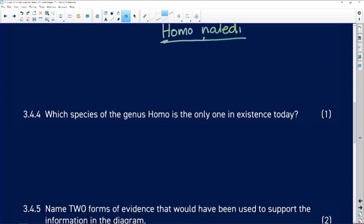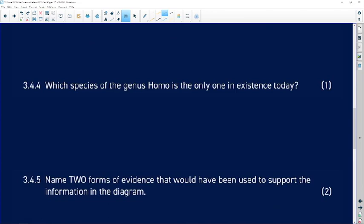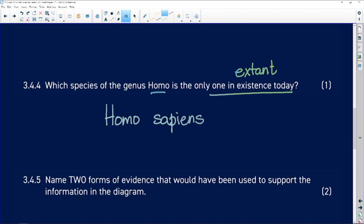Which species of the genus Homo is the only one in existence today? We are Homo sapiens. There are no other hominids. There are no other hominids around in existence today. Another word for that is extant. All the other species of the genus Homo have gone extinct. Capital letter for Homo, small letter for sapiens and we underline it.